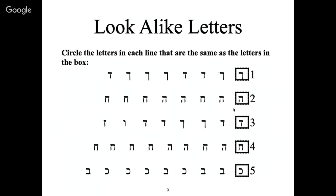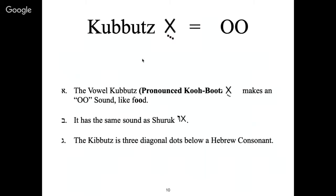We should be able to look at these letters intermixed with their lookalikes and distinguish them. Now let's look at the vowel Kubutz. The names of these vowels help you remember the sound they make. Kubutz makes the 'oo' sound like food. The Kubutz is three diagonal dots below a Hebrew consonant giving you the 'oo' sound, like food.